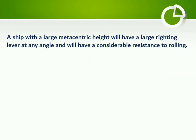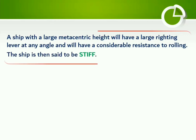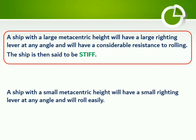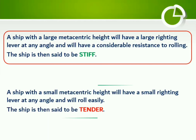We can very well observe that righting moment is directly proportional to metacentric height. A ship which has a high metacentric height will be highly stable and hence will have enough resistance against rolling. Such ships are called stiff ships. Other ships sailing with less metacentric height will have a tendency to keep on rolling to larger angles of heel. They are called tender ships.